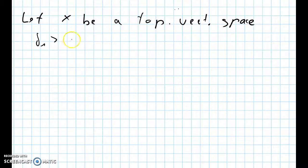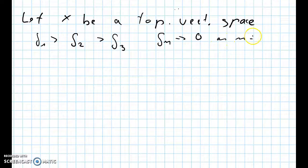Δ1 is bigger than Δ2 is bigger than Δ3 and so on, and the sequence tends to zero as n goes to infinity.